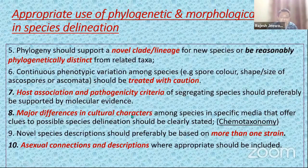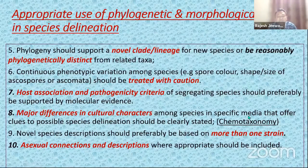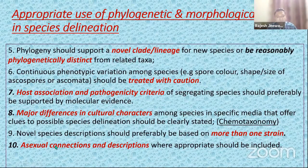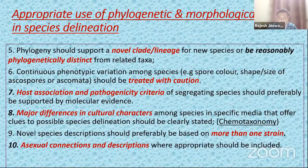It is also important to infer host association and any pathogenicity criteria, which are quite important in segregating species. Are there differences in morphological characters that can be used to a certain extent? Nowadays people are going ahead with chemotaxonomy — using the chemical profiles of different species. If you're going to describe new species, you should do it based on more than one strain. If you have a species that exists only in its sexual state, sometimes it could produce its asexual state in culture, so try to combine the descriptions and provide this information to the scientific community.